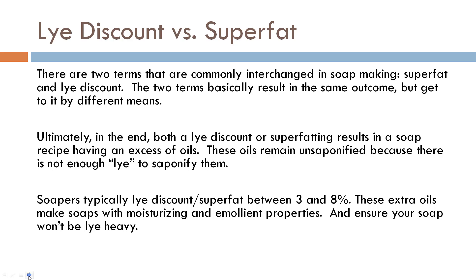Typically we super fat between three and eight percent. I like to super fat at four or five percent, but you can play around with that — this is just a guide. It really depends on the type of soap you are making. For example, if you're going to make a salt bar, you're probably going to be super fatting at 20 percent. For a general hand and body soap, super fatting around five percent is a good place to start.